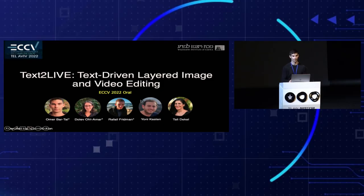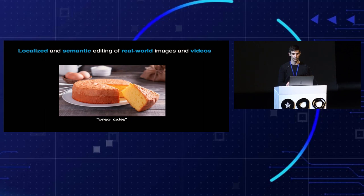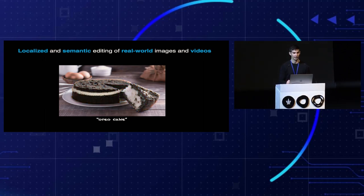Today we will present a recent work of Text2Live: text-driven, layered image and video editing. What we focused on is editing real-world images and videos using text. More specifically, we focused on localized semantic edits of existing objects in the scene. Given this image of a cake and a text describing the desired edit — in this case, Oreo cake — we want to modify the cake in a semantically meaningful manner while preserving the rest of the content in the image.